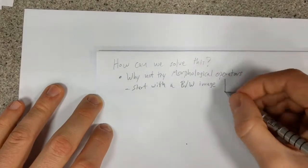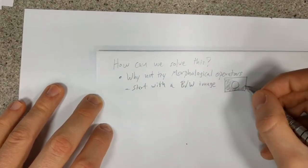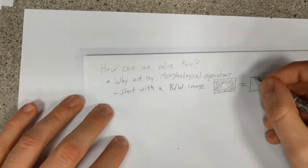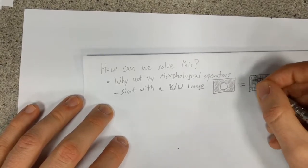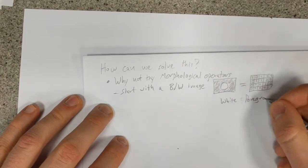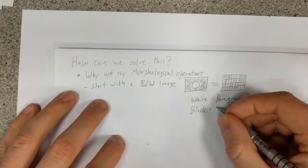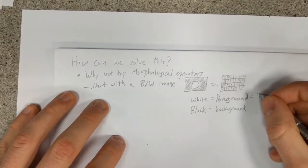Morphological operators alter an image based on the dictates of set theory. To start, we must first translate our desired image into a black and white pattern. Doing so allows us to find two regions, the white foreground, represented by a 1, and the black background, represented by a 0.